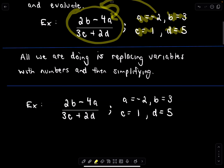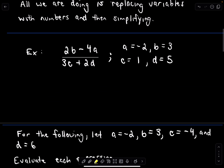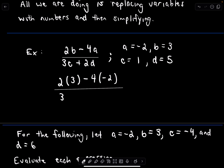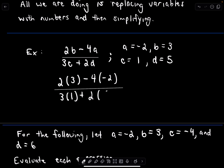Let's go back to our example and simplify. We have 2 times b — b is equal to 3, so I'll put 3 here — minus 4 times the value of a, which is negative 2. I like to put things in parentheses when I substitute. Then we've got 3 times c, where c equals 1, plus 2 times d, which is 5.